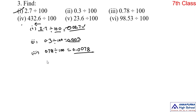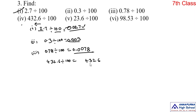Next, 432.6 divided by 100. Ignore the decimal point and write the number: 4, 3, 2, 6. Over one, two zeros are there — we are dividing by 100. Shift the decimal point towards left by two digits, because two zeros are there. This is the easy method: 1, 2, put point immediately after two digits. The answer is 4.326.